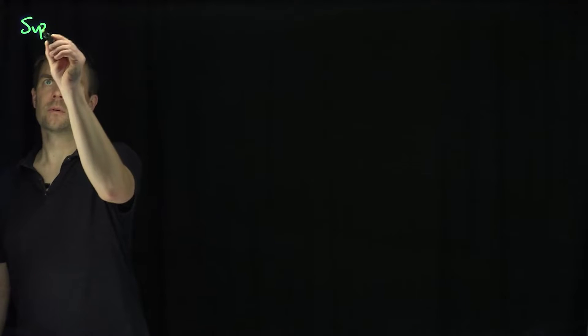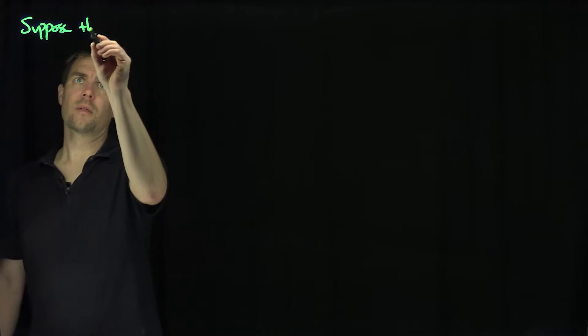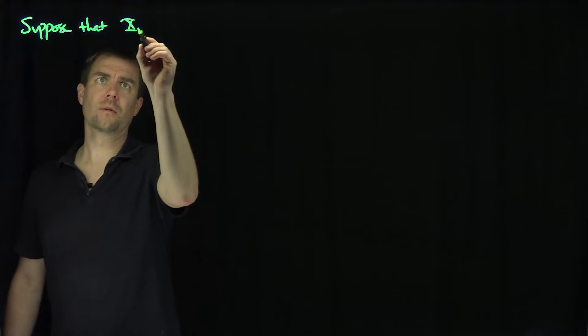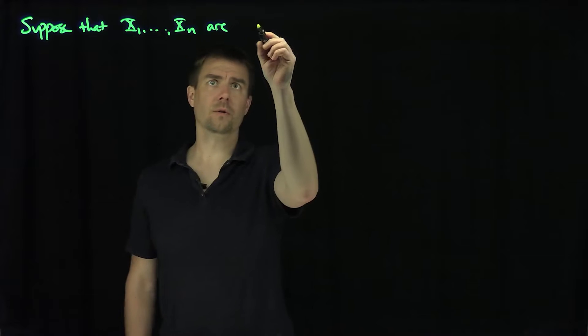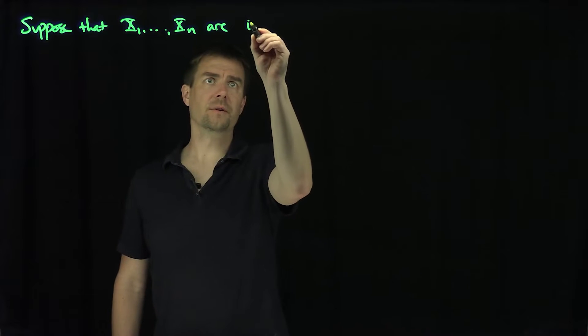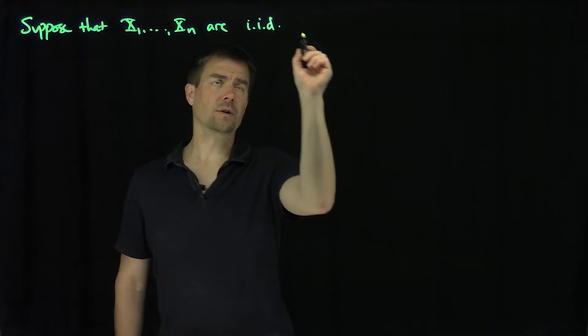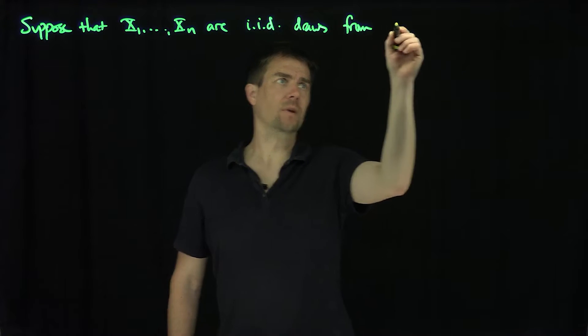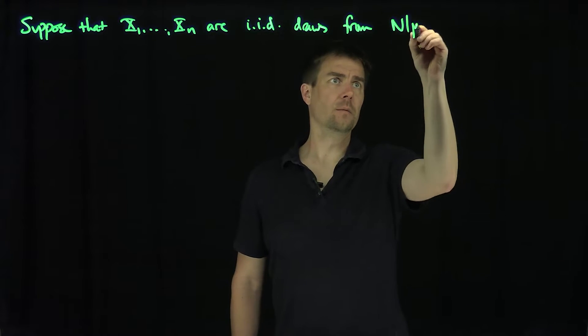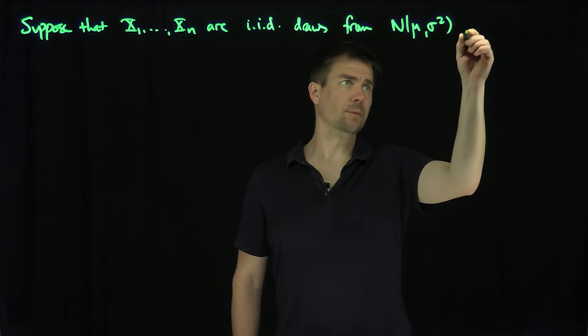Hello students. In this video we'll compute the efficiency of the sample variance of draws from a normal distribution. Let's suppose that x1 through xn are normal independent identically distributed draws from N(μ, σ²).